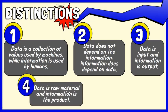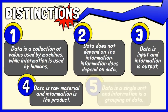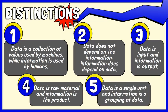Fourth, data is raw material and information is the product. And fifth, data is a single unit and information is a grouping of data.